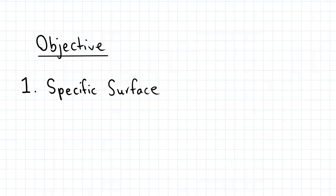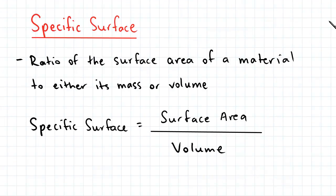Hey guys, the objective of today's video is to talk about the specific surface of soils. Now the specific surface of a material is defined as the ratio of the surface area to the mass or volume of a material.